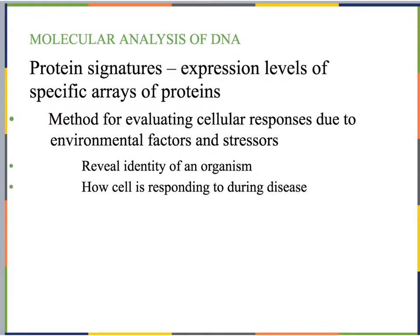Here in 12.2, we're going to be taking a look at characterizing and visualizing how we visualize DNA, RNA, and proteins from different cells. At the beginning of the chapter, it talks about protein signatures — how we can identify an organism based on its proteins, which is also specific to different cellular responses and what's happening in its environment.